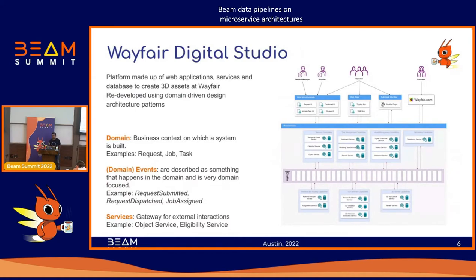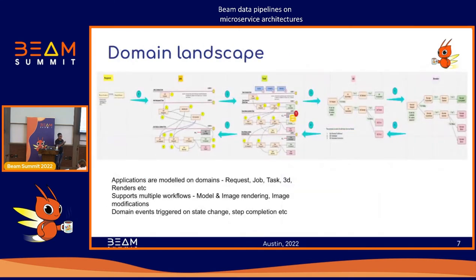At Wayfair, we have Wayfair Digital Studio — an application used to create 3D assets. A few years ago it was rewritten using the domain-driven design architecture pattern. As you see on screen, the user interacts with the UI, the UI makes microservice calls across multiple domains, and within the domains, events are triggered as a completion of a workflow step. This diagram talks about five different domains: request, job, task, 3D, and render.